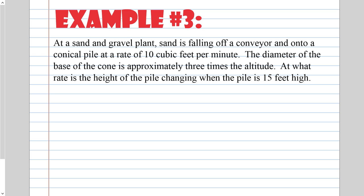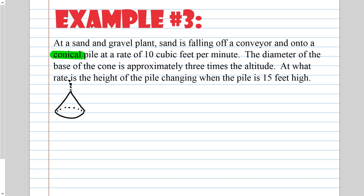Example 3. At a sand and gravel plant, sand is falling off a conveyor and onto a conical pile at a rate of 10 cubic feet per minute. The diameter of the base of the cone is approximately 3 times the altitude — altitude just means height. At what rate is the height of the pile changing when the pile is 15 feet high? So dV/dt is 10, and the diameter equals 3 times the height.